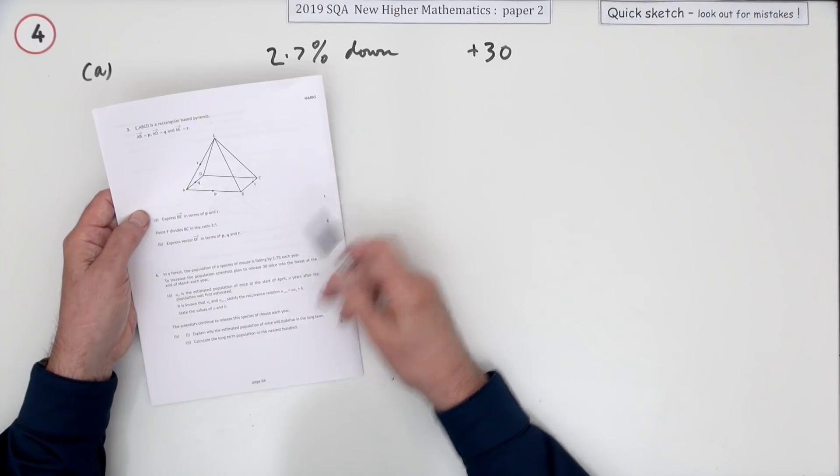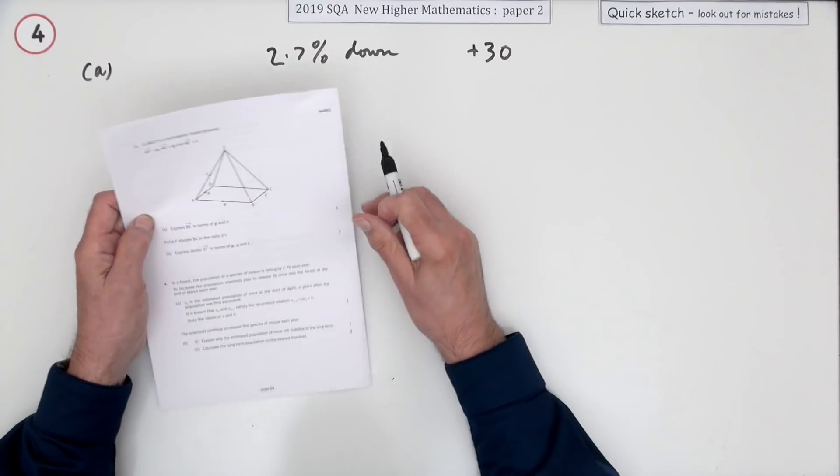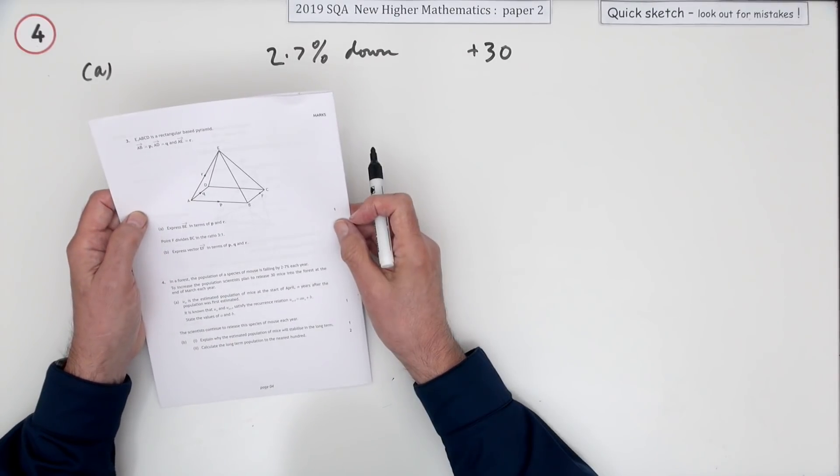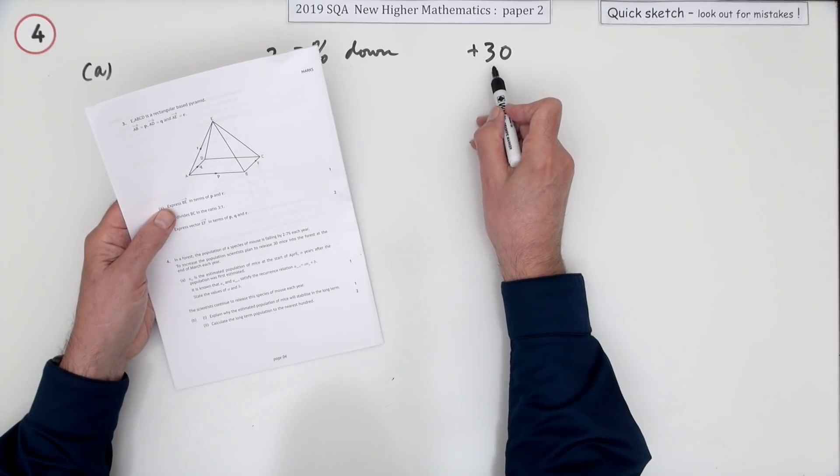In a forest the population of a species of mouse is falling by 2.7 percent each year. So it's going down by 2.7 percent. To increase the population, scientists plan to release 30 mice into the forest at the end of March each year.